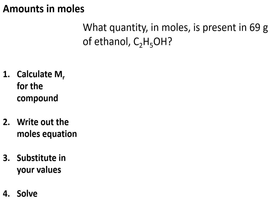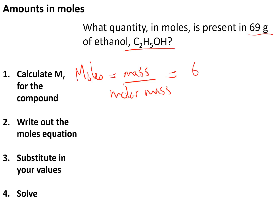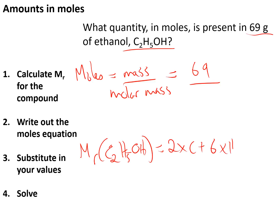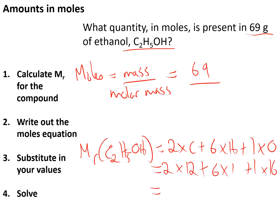To find the quantity in moles of a chemical compound, use the equation: moles = mass ÷ molar mass. For example, with 69 grams of ethanol (C₂H₅OH), the molar mass equals the relative formula mass: 2×12 + 6×1 + 1×16 = 46 g/mol. So moles = 69 ÷ 46 = 1.5 moles.